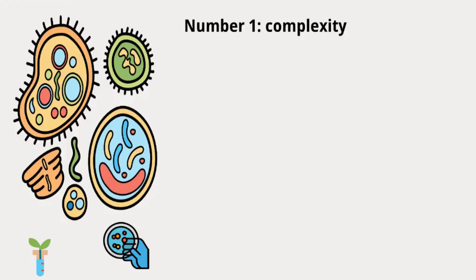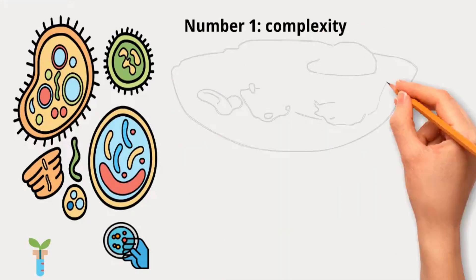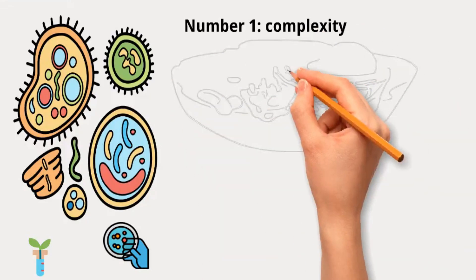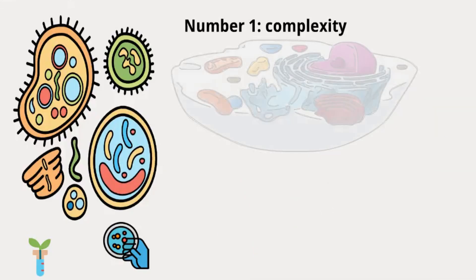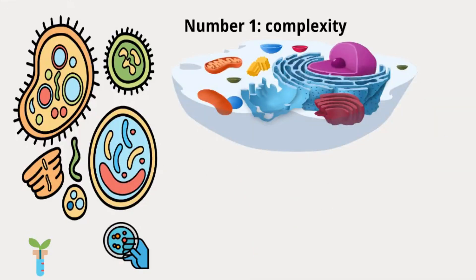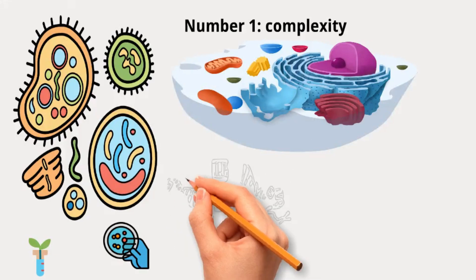Number 1: Complexity. Cells are incredibly complex and organized. Complexity means having lots of parts that need to be in the right place and work together without errors. Cells are precise in their activities, like copying DNA with very few mistakes.